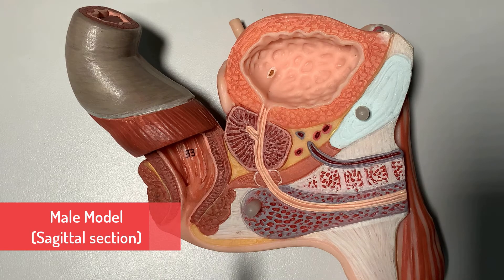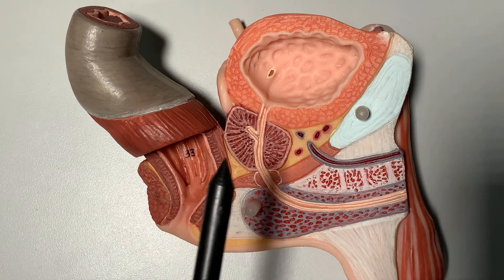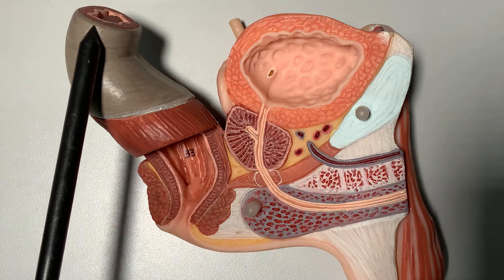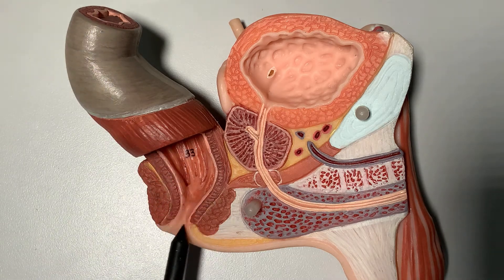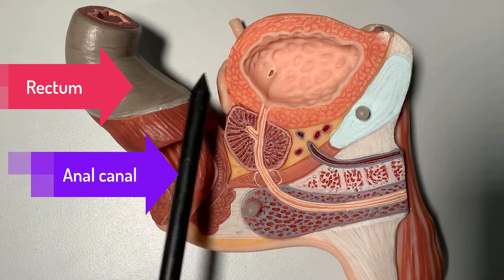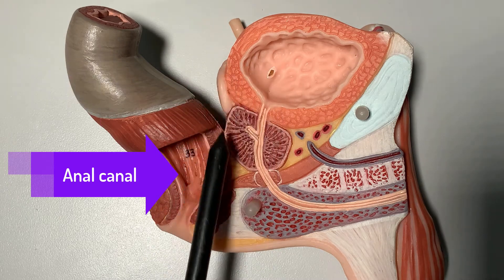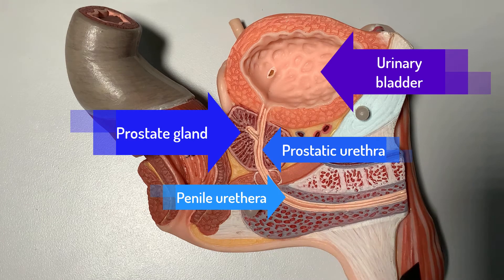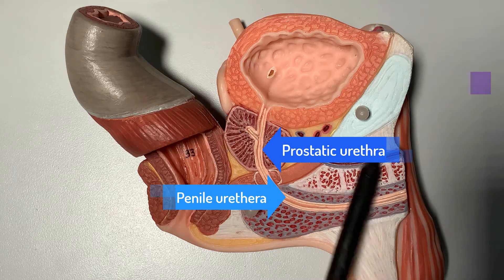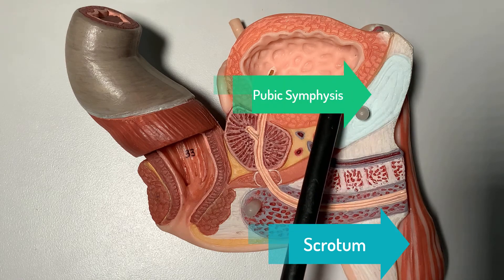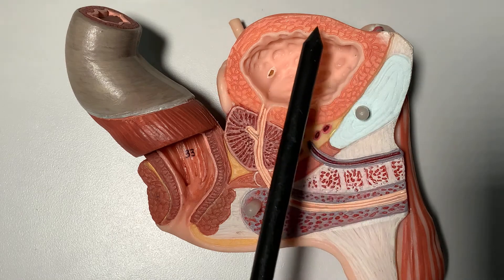Using this plastic model for better understanding, we can see from the back the rectum which becomes the anal canal. In front of the rectum is the urinary bladder, and there is the prostate gland. This is the urethra which goes into the penis, and this is the scrotum. The most anterior structure is the pubic symphysis.